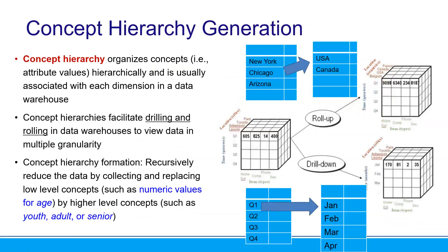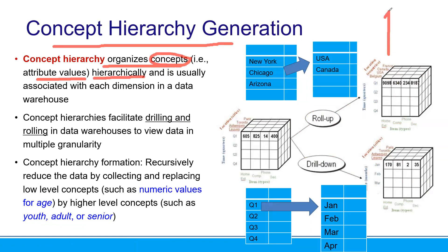Another idea — I think you already know this thing before. In the attribute aggregation, we can do something similar to the concept hierarchy generation. We call it concept hierarchy generation because it organizes concepts. Concept is based on the values, and we want to perform hierarchically — from bottom to top. It is usually associated with its dimension in the data warehouse. The concept hierarchies facilitate drilling and rolling. We will learn more about drilling and rolling in the data warehouse.